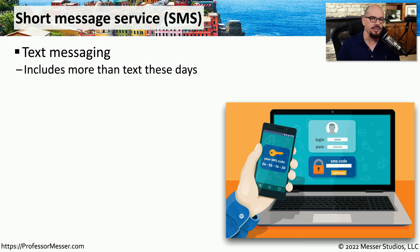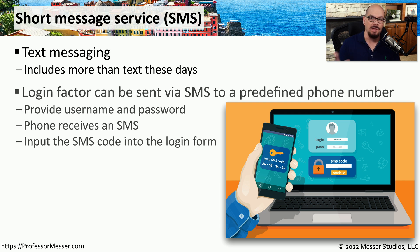Another type of authentication can come from SMS, or short message service — effectively text messaging used to send you the code instead of using an app or an external token generator. To log in, you would submit your username and password, which would then send you a text message with another code that you would input on a separate screen. This confirms that you are the one who has your phone with you, and you've now authenticated using this additional authentication factor.